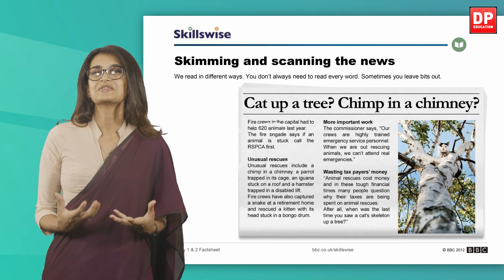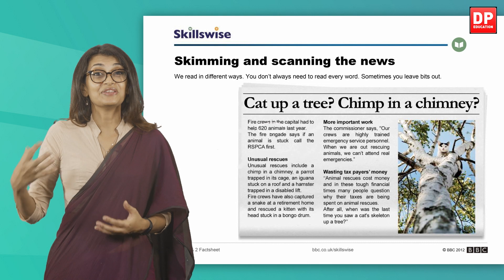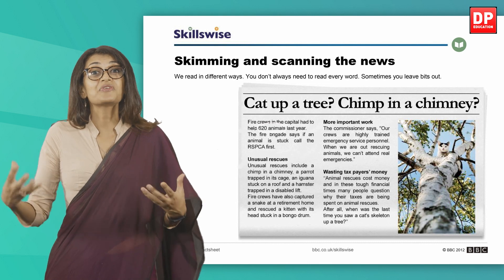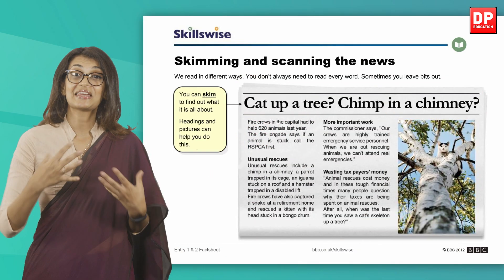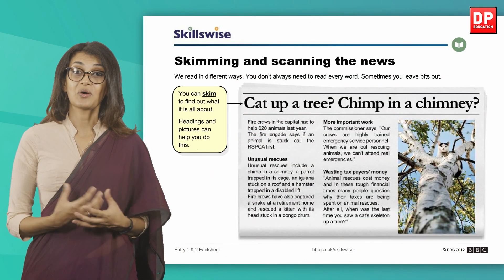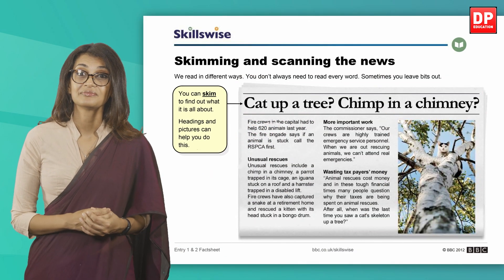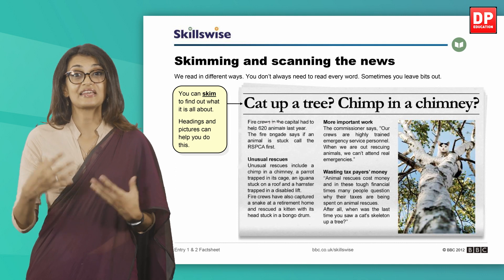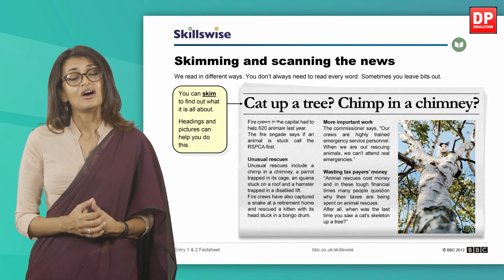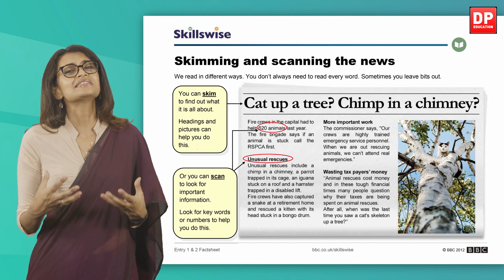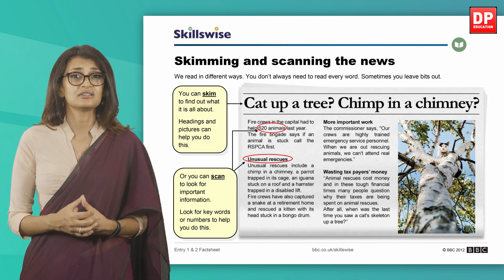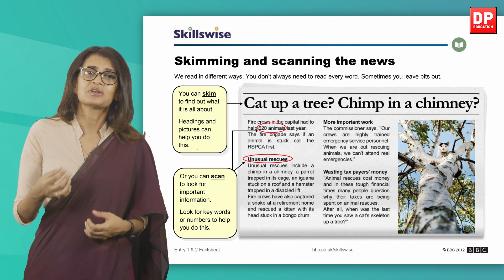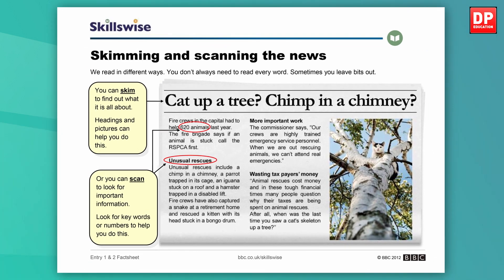Let's look at this newspaper article. You can use both techniques to understand what the text is about. You can skim to find out what it is all about — headings and pictures can help you do this. Or you can scan to look for important information — look for keywords or numbers to help you do this.